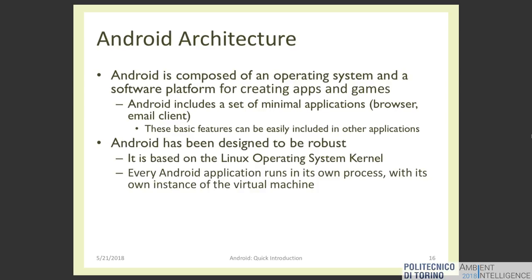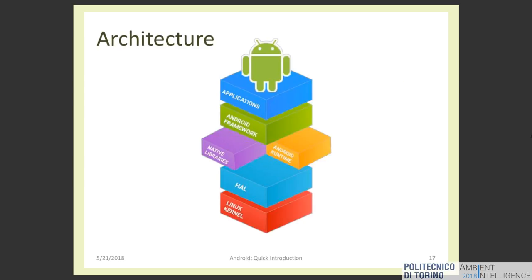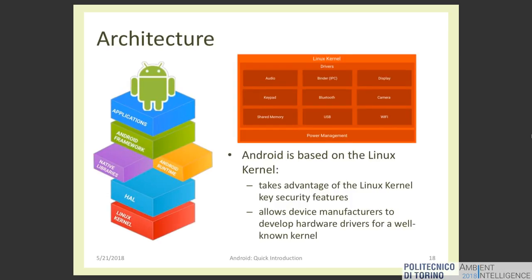Android has been designed to be robust. It's based on the Linux operating system kernel, and for security purposes each Android application runs in a separate process. In each process there is an instance of a virtual machine that executes the code. This figure shows the overall architecture of Android. The first block is the Linux kernel, which provides security features and allows device manufacturers to develop hardware drivers. In the kernel you have all the functionality a kernel typically performs: memory management, network management, inter-process communication, and so on.